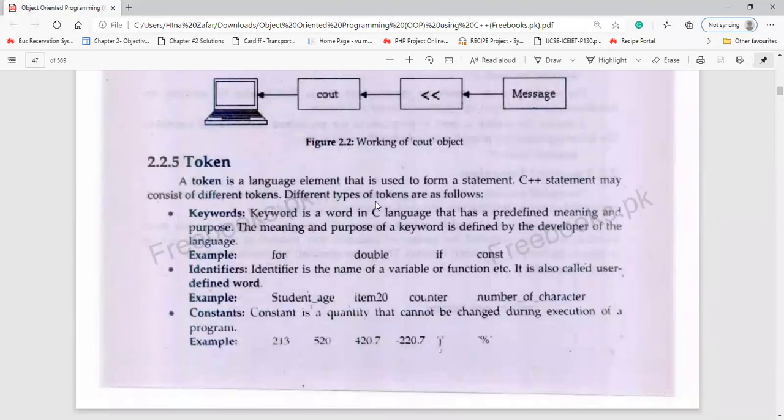Now we have tokens. Token is a language element. A programming language consists of different tokens, like keywords. Keywords are in C language. They have pre-defined meanings. As I told you earlier, when you write the words, they become keywords. And those keywords cannot be used again. Therefore, you can't use it. Developers have used it for the first purpose and they define it. Therefore, you can't do any definition for them.